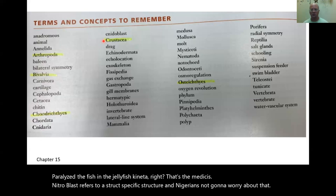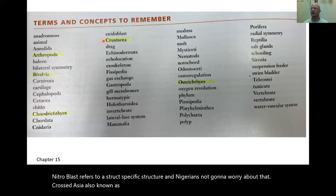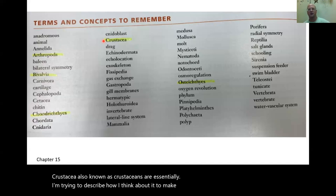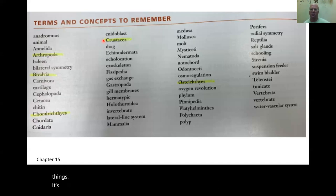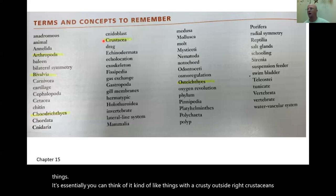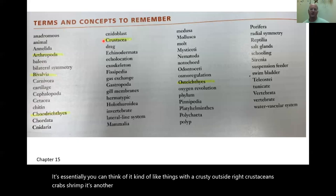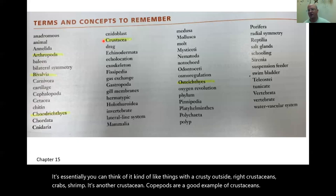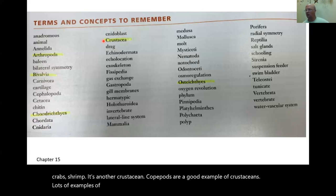Crustacea, also known as crustaceans — you can think of them as things with a crusty outside. Crabs, shrimp, copepods are good examples of crustaceans. They are common in a variety of different marine environments.